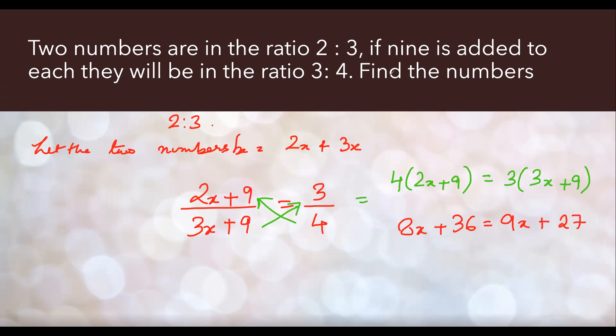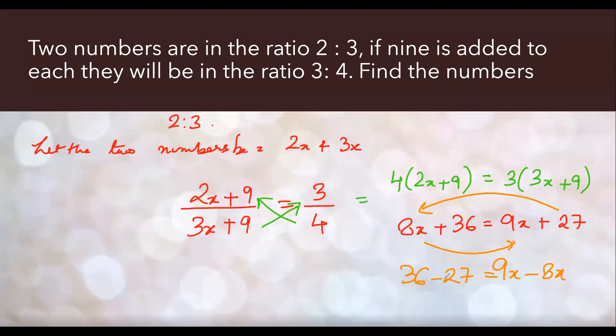Now let's put it down. 4 times 2 is 8. 8x plus 4 times 9 is 36 equals to 3 times 3 is 9, 9x, and 3 times 9 is 27. So now what are we going to do? We'll take 27 to the other side and 8x to the other side. This becomes 9x minus 8x and here it is 36 minus 27.